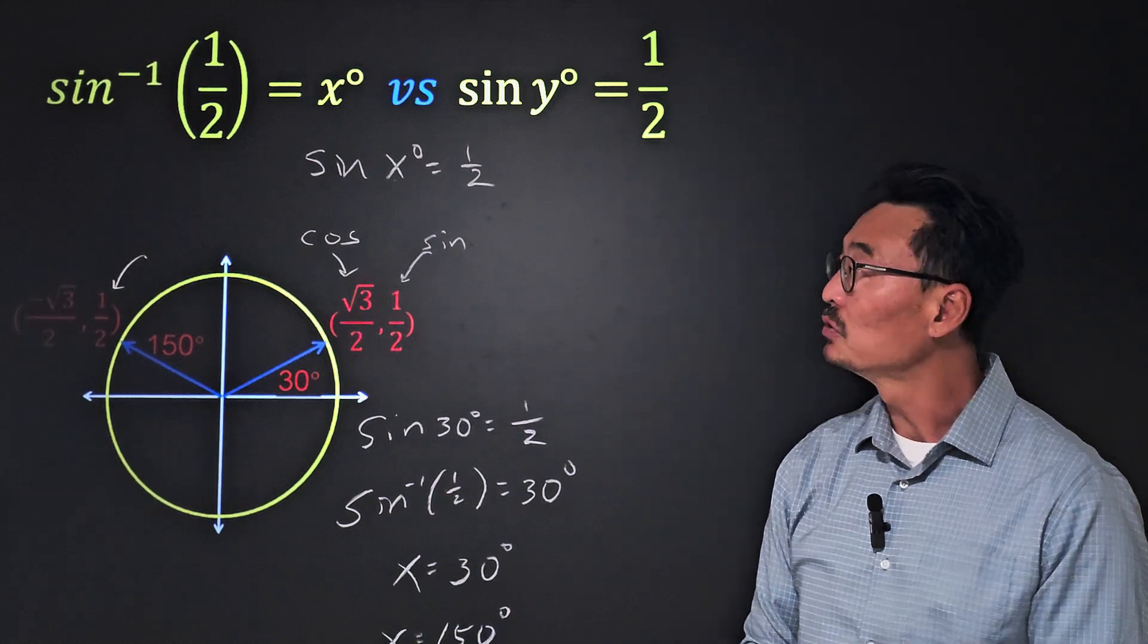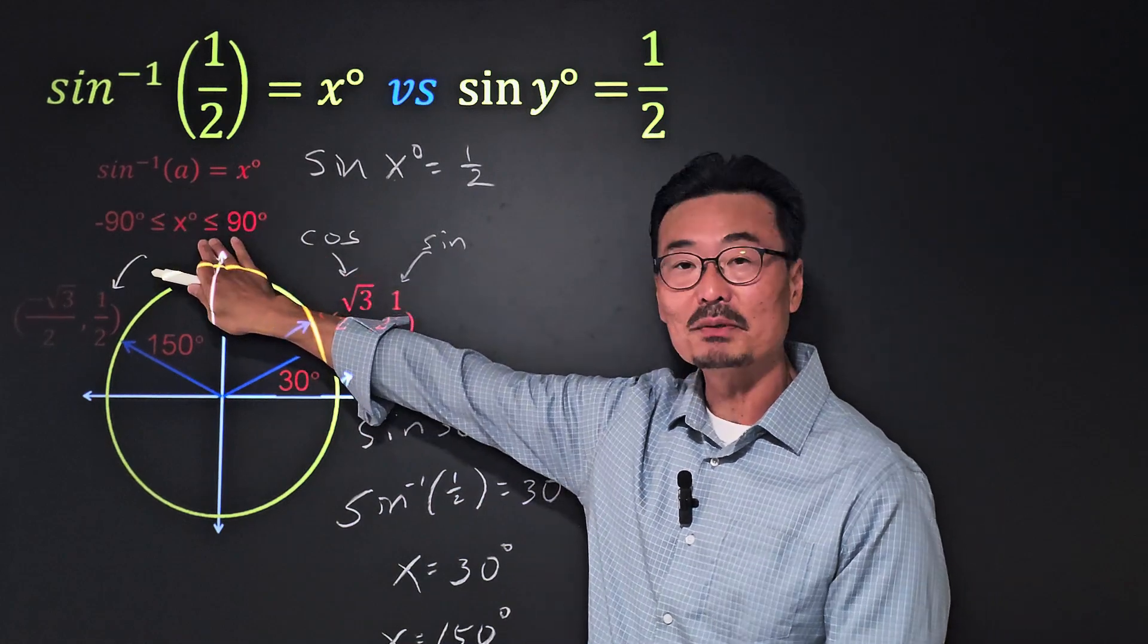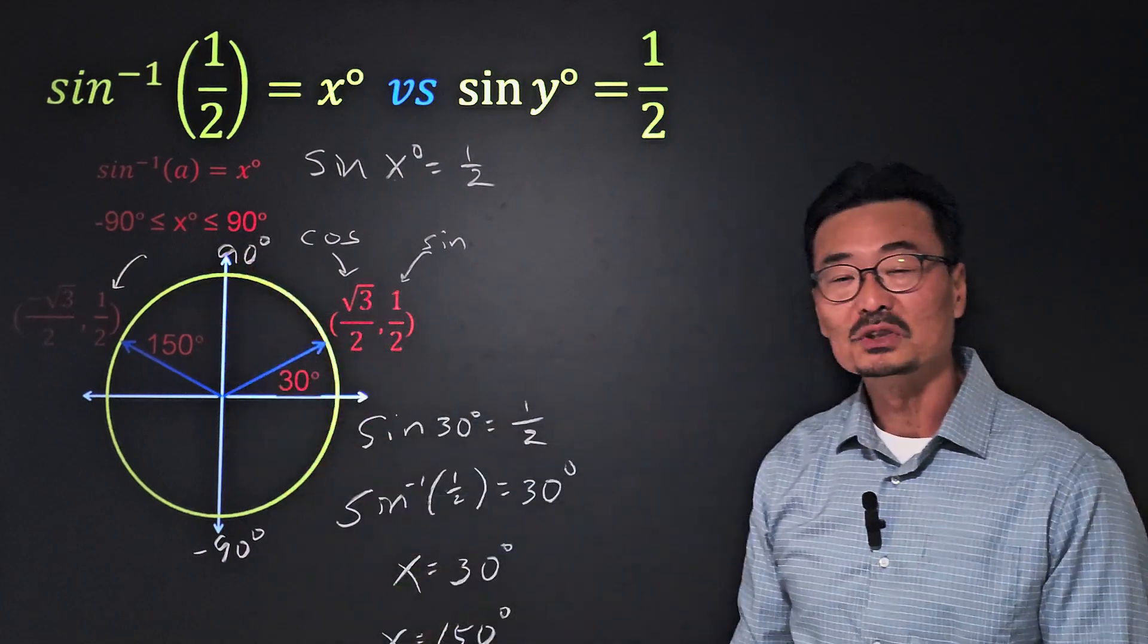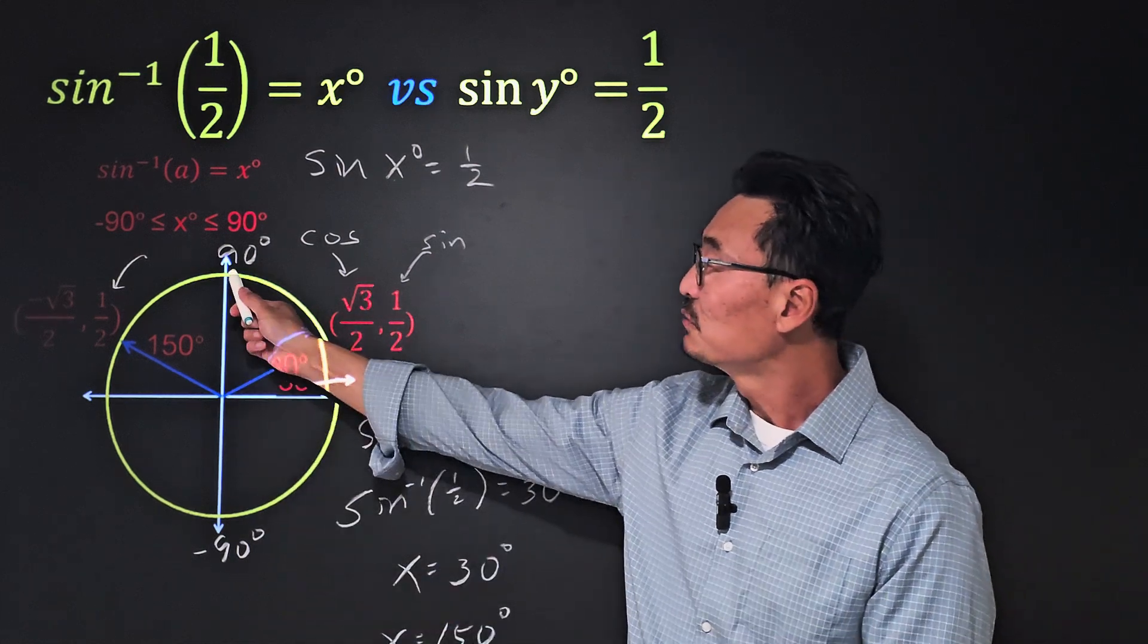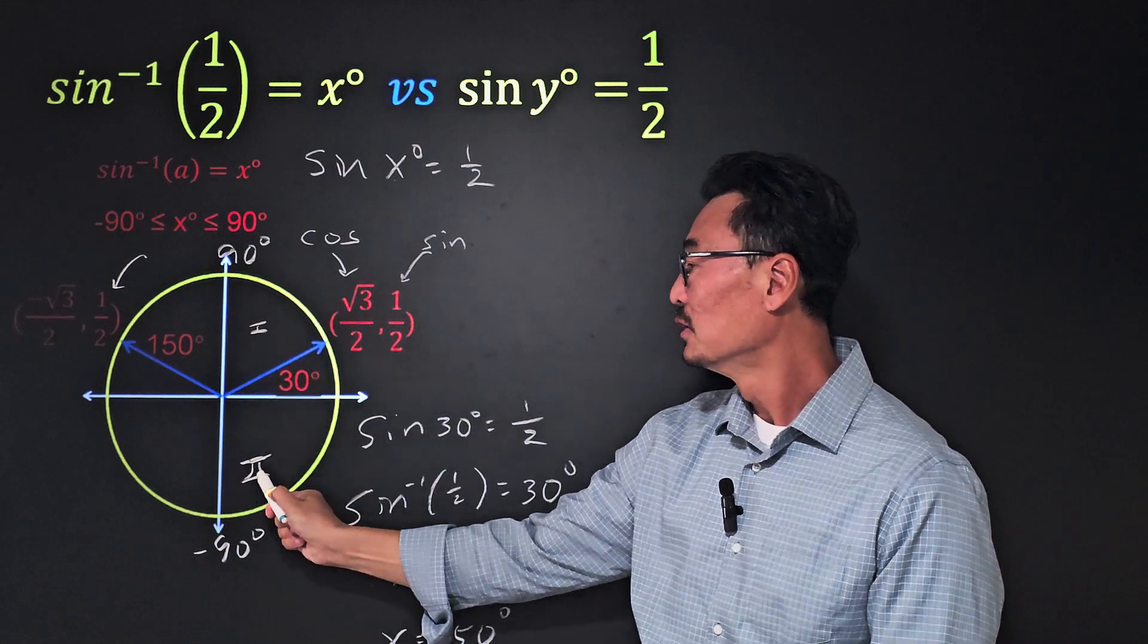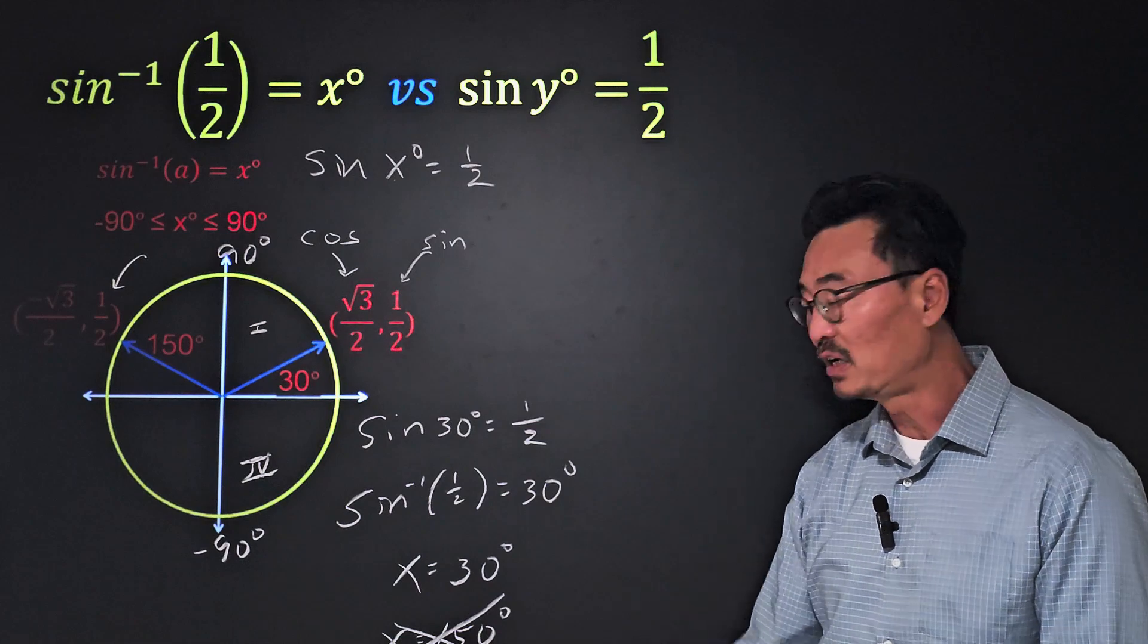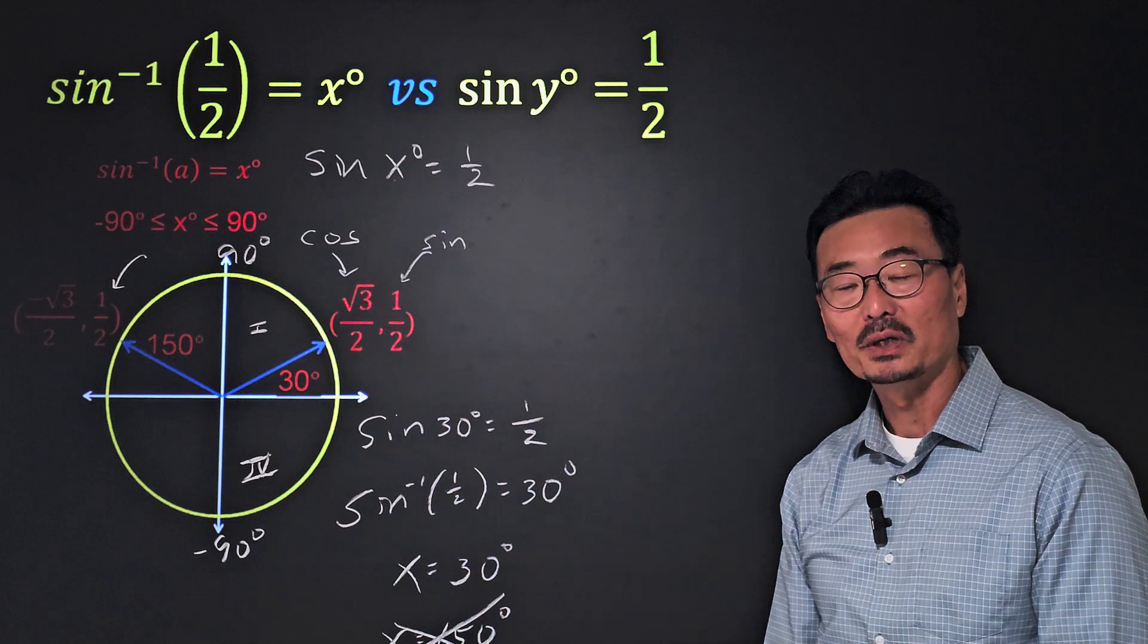And that's the reason why we have this rule where it says that inverse sine of a equals x degrees, that x must be between negative 90, which is down here, and 90 degrees, which is at the top, or at the π over 2 value. So the inverse sine has to be in quadrant one or quadrant four only. Therefore, x equals 150 is eliminated as part of our answer for the inverse sine of one-half equals x equation.